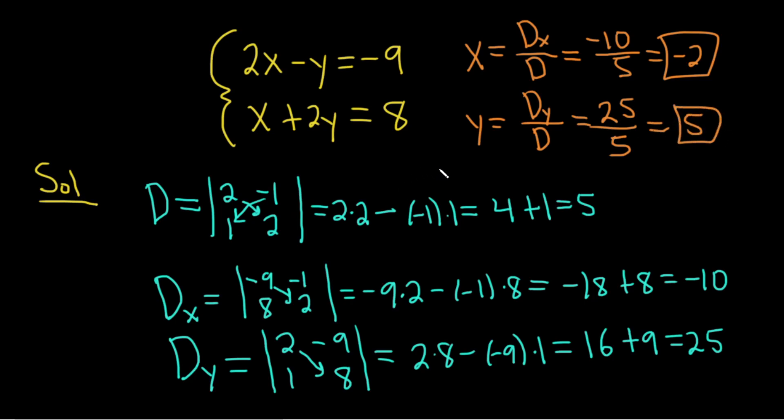And we could check our answers by taking these numbers and plugging them in to make sure that they work. I'll do it really quickly mentally here. So if you take negative 2 for x and 5 for y, you'll get 2 times negative 2 minus 5. Yep, that's negative 9.